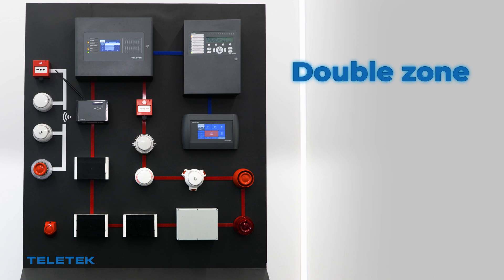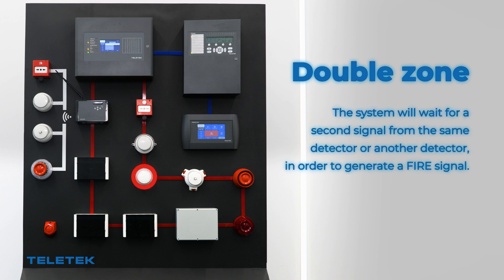Double Zone mode: any detector activation within the system generates a pre-alarm to the respective zone. However, the system will wait for a second signal from the same detector or another detector in order to trigger a fire alarm signal.